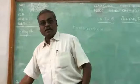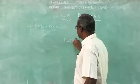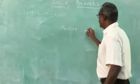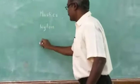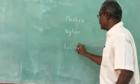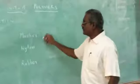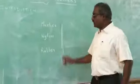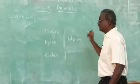So polymer we can say, commonly we can say plastics and nylon and rubber. These three will come under the category polymers.